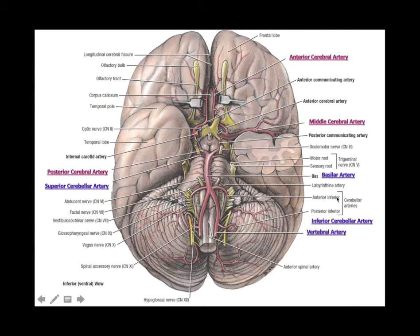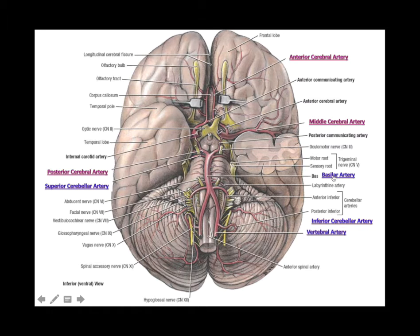Before discussing the cerebellum, let's stop at the basilar artery. The basilar artery supplies the brain stem region — the base of the brain — which gives you the pons. If a person has a basilar artery infarct, they will have tetraplegia due to damage to the corticospinal tract, cranial nerve dysfunction from cranial nerves four through eight, and potentially coma because of damage to the reticular formation.